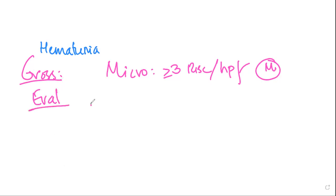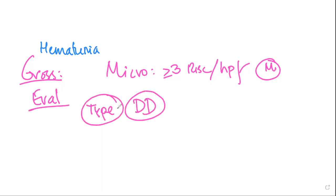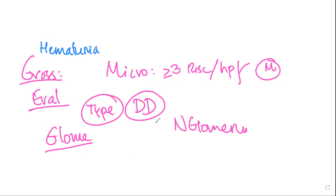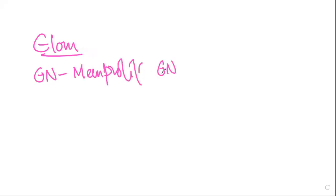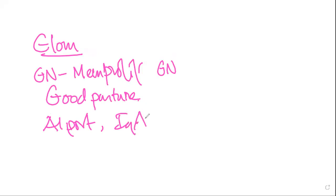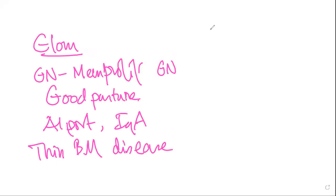In evaluating hematuria, the first step is to determine the type. We classify hematuria into glomerular and non-glomerular types. For glomerular hematuria, common differentials include membranoproliferative glomerulonephritis, Goodpasture syndrome, Alport syndrome, and thin basement membrane disease.